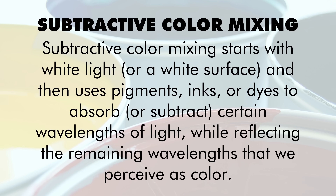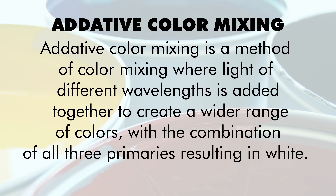CMYK is known as a subtractive color model, which basically means when you add all the colors together you make black, or when you take them all away you end up with white. This is different to what your monitor or phone screen uses, which is RGB — red, green, blue — an additive model where adding color gives you white and removing gives you black. It can be a little confusing, but for our purposes all you need to worry about is that we're going to be working in CMYK.